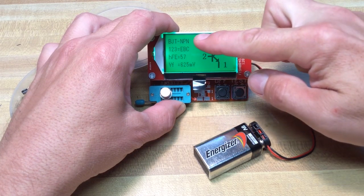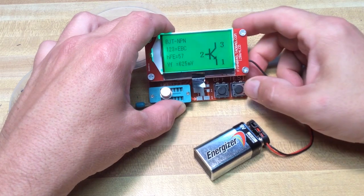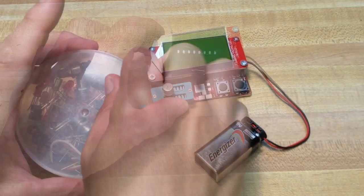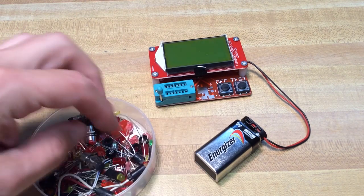It's an NPN type transistor. Shows me the emitter, base and collector in that order, connected in the socket. So good so far. This is looking pretty handy.